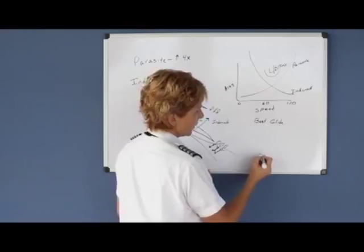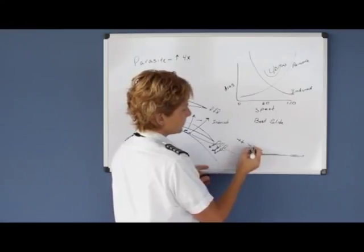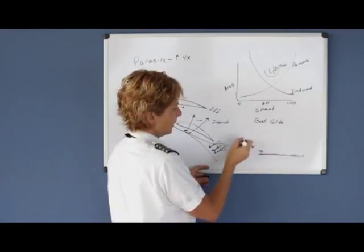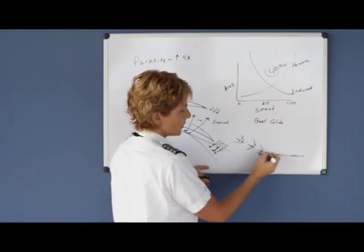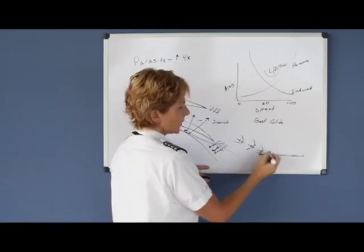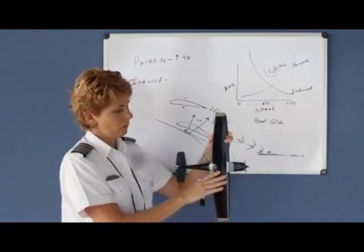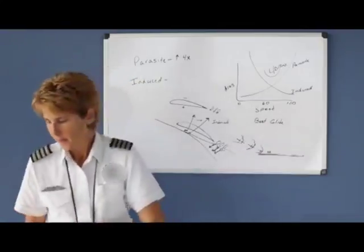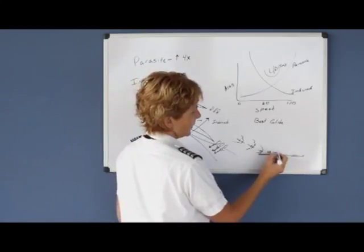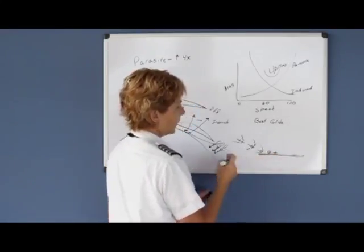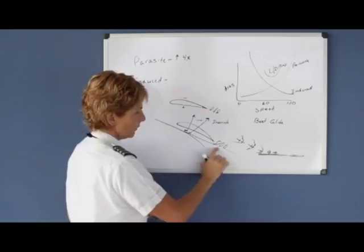If we flew the aircraft very close to the ground — within about half a wingspan width from the runway — we disrupt the airflow patterns around the airplane. So once we come down into ground effect, the wing tip vortices are reduced, because the ground is in the way of those vortices.